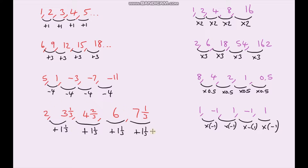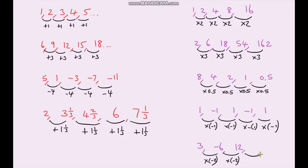I'm going to give you the first two terms and I'd like you to work out the next three terms. To go from three to negative six: to go from three to six would be multiplying by two, but because we're going from a positive to a negative number, we're multiplying by negative two. So negative six times negative two gives positive 12. Twelve times negative two gives negative 24. And negative 24 times negative two gives positive 48.